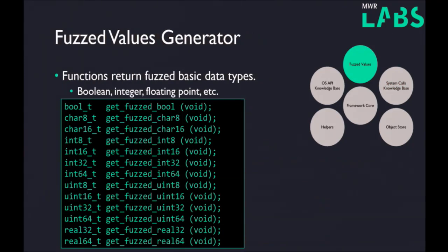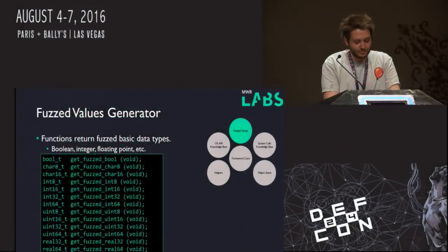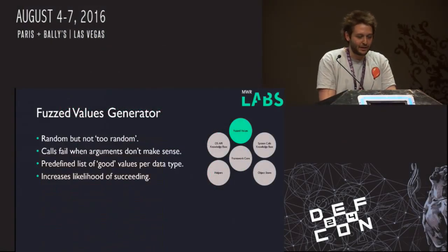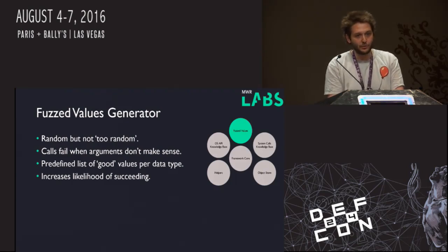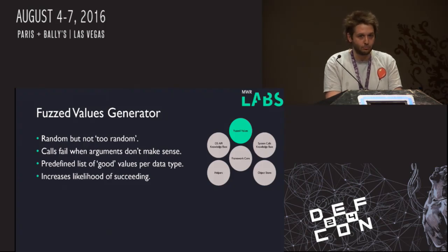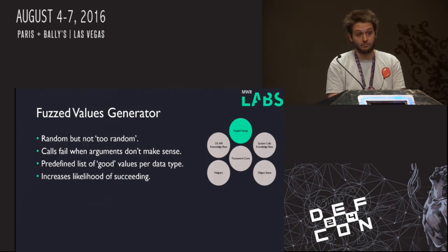We also have a number of fuzzed values. We use the word 'fuzzed,' but what we don't necessarily mean is fully random fuzzed. We actually want the library calls and syscalls to work, and to get these to work we have to return proper values. So whilst we occasionally return a properly fuzzed value, most of the time we return a normal value that is going to ensure the library call and system call actually works.